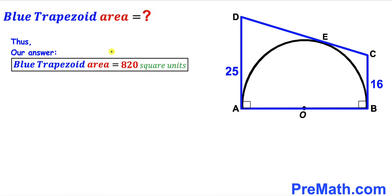After all calculations, the area of blue trapezoid ABCD turns out to be 820 square units — that's our final answer. Please don't forget to subscribe to my channel for more exciting videos.